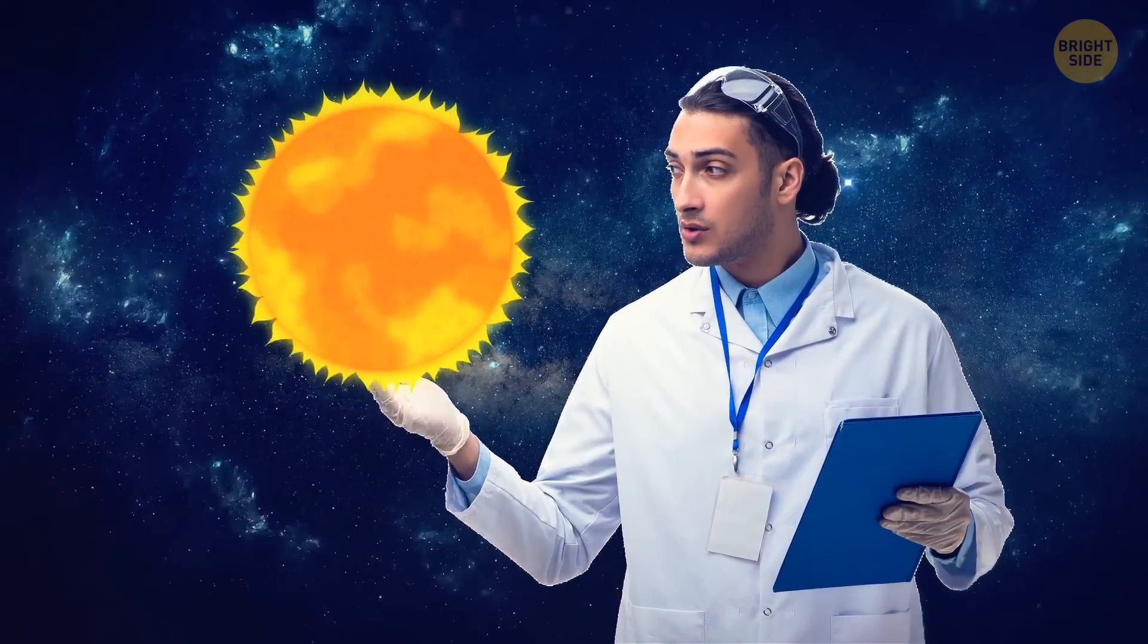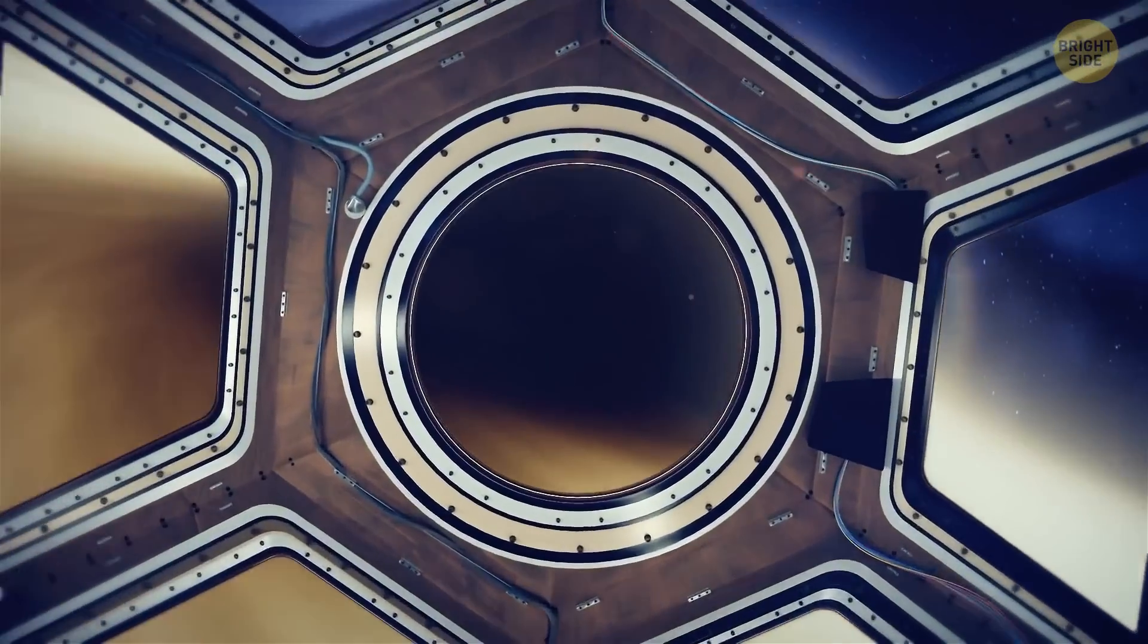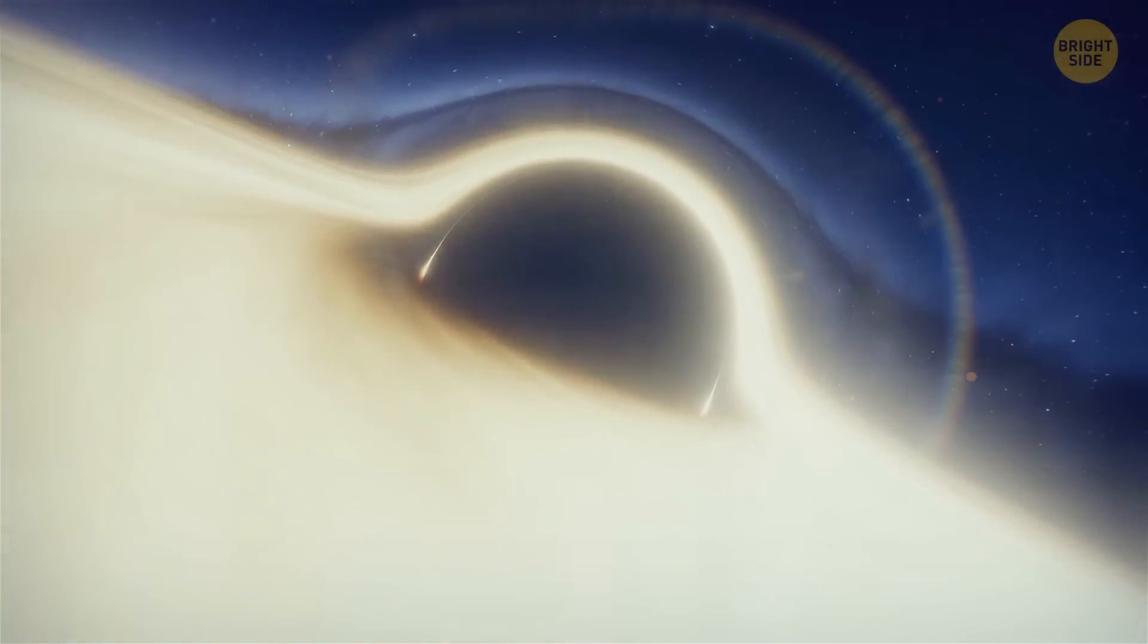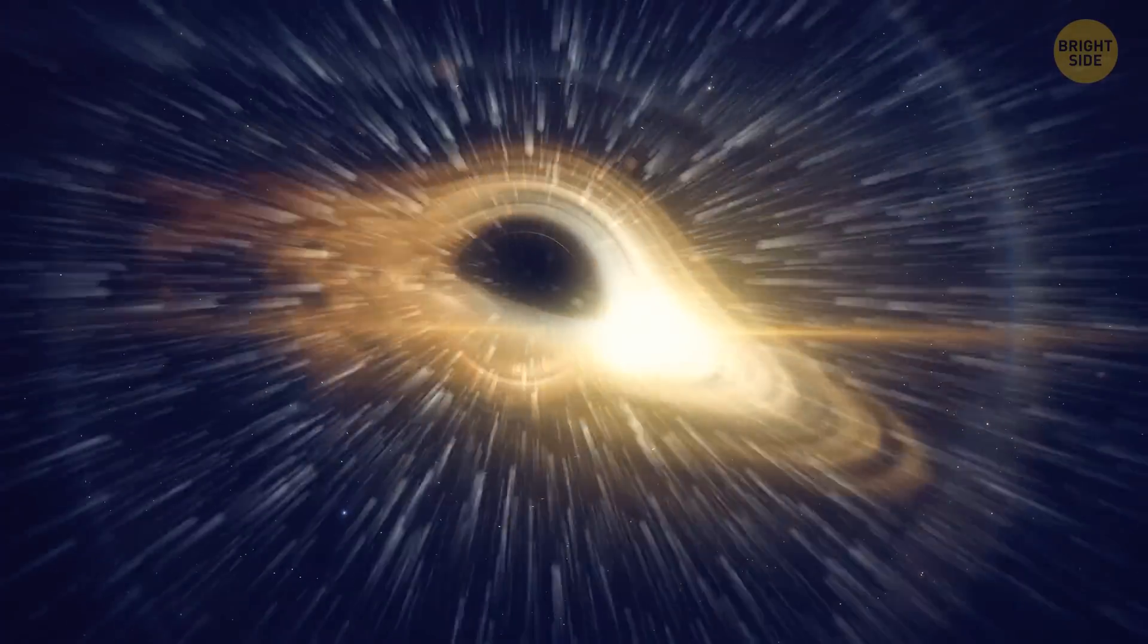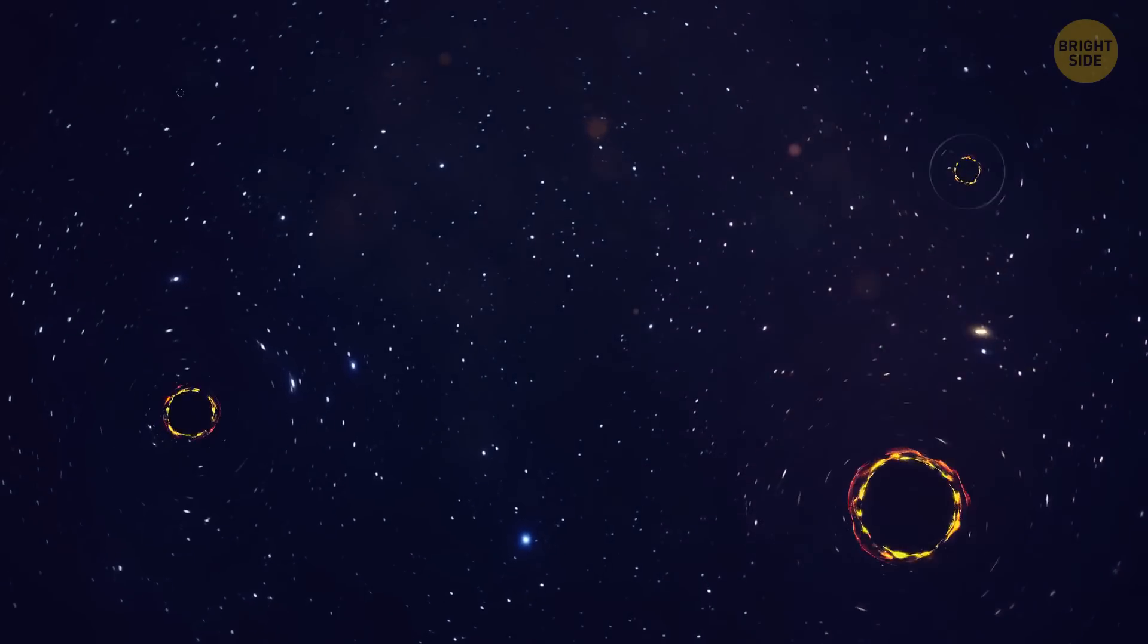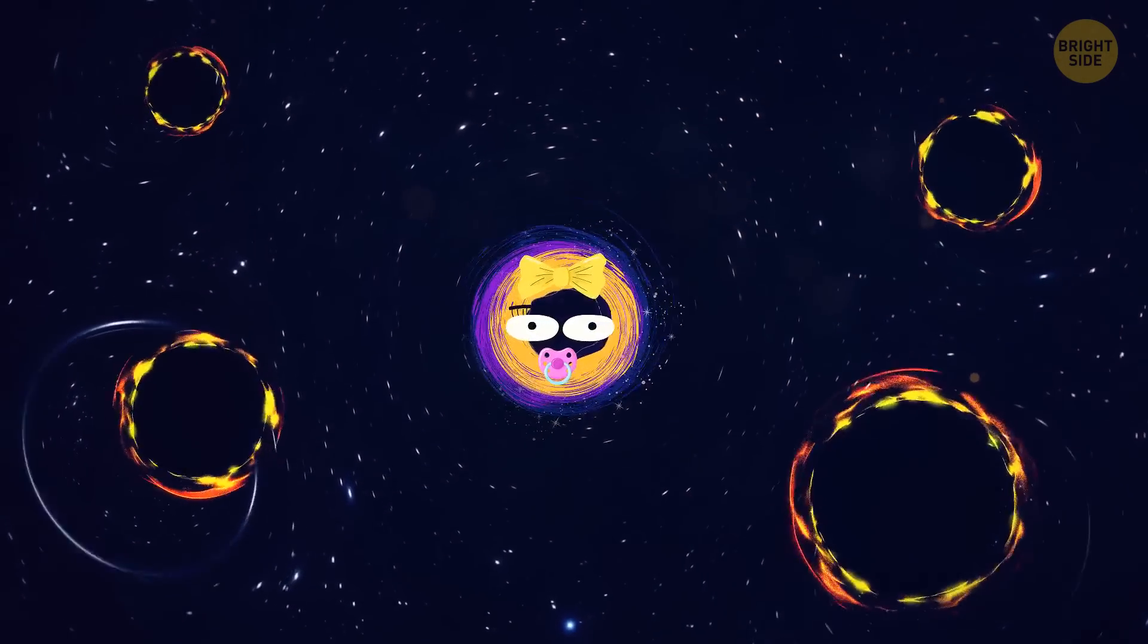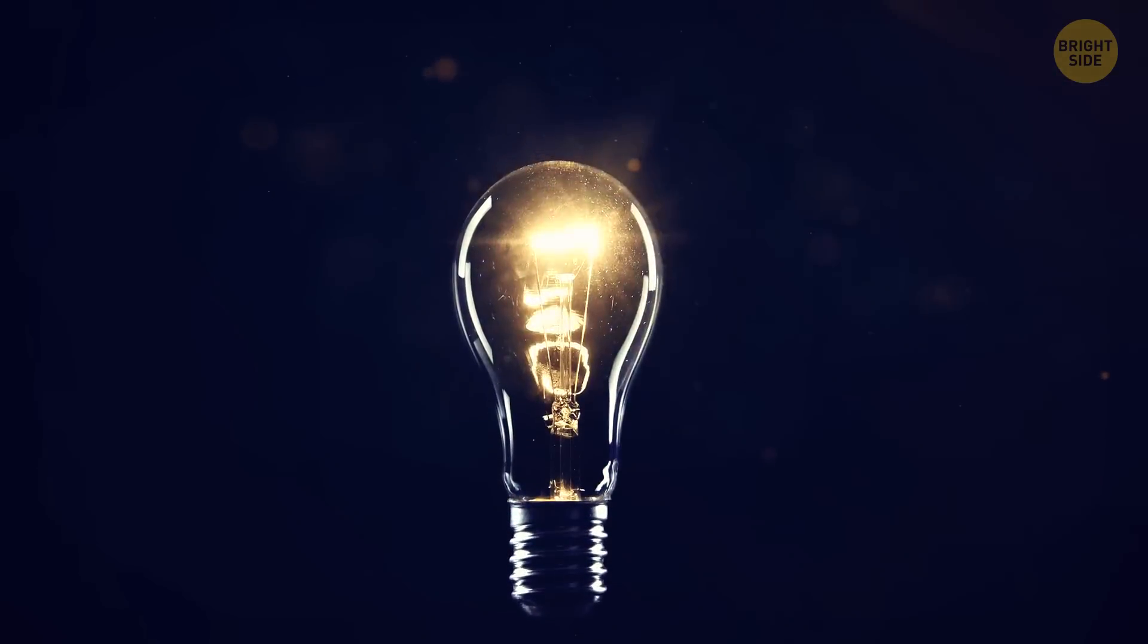So, why do scientists believe that quasi-stars could have existed? Because they're looking for ways to explain how supermassive black holes formed so early in the history of the universe. They're found at the center of most galaxies. But how could these monsters have formed so quickly? After all, it takes a really long time for small black holes to grow into supermassive ones. This is where the idea of quasi-stars come in.